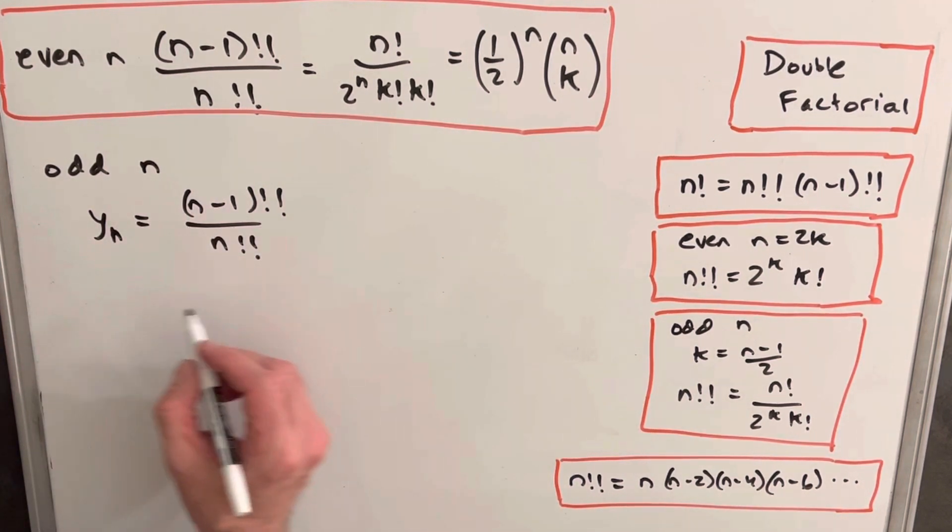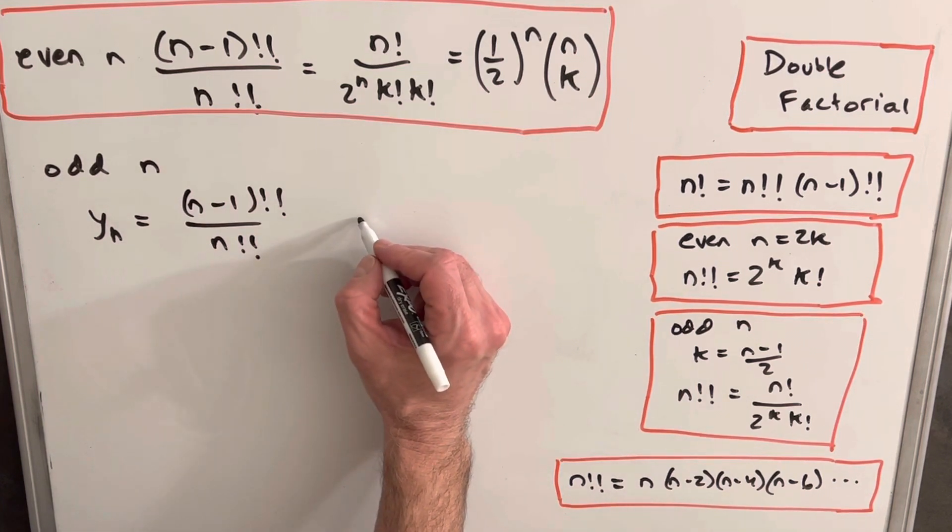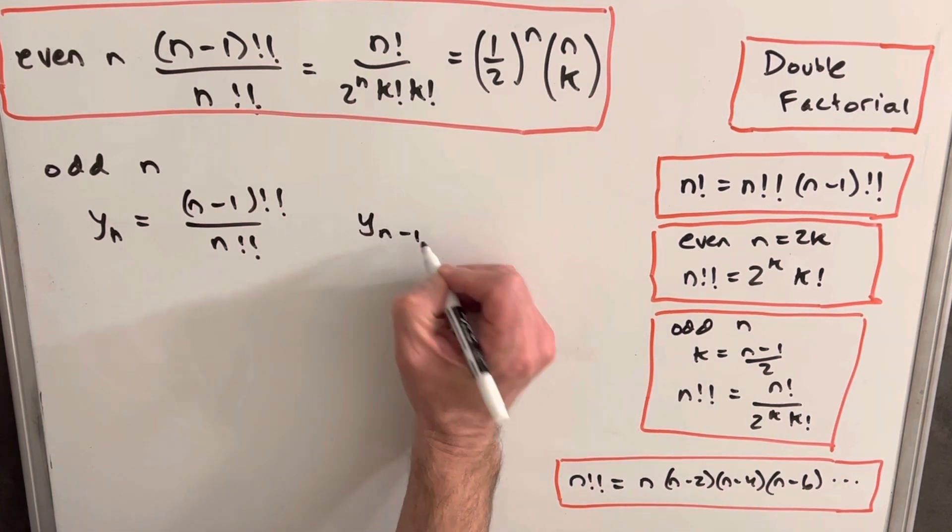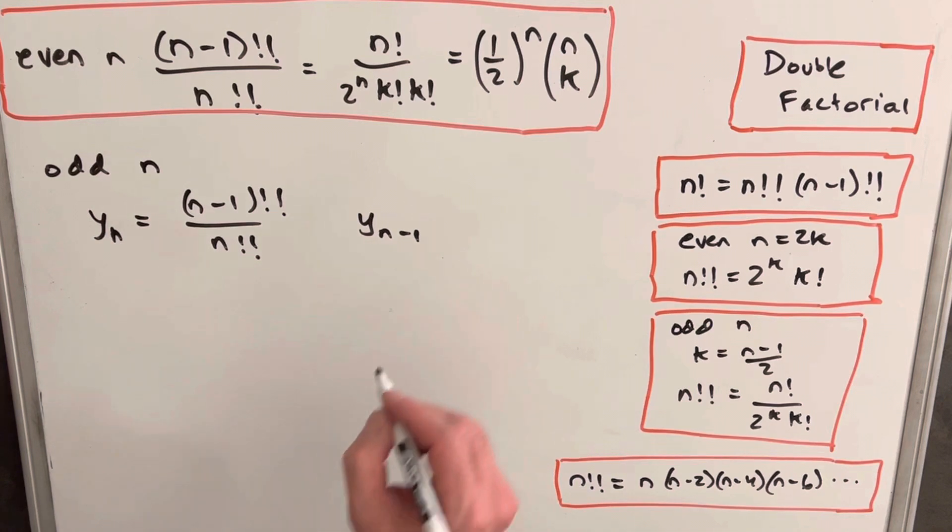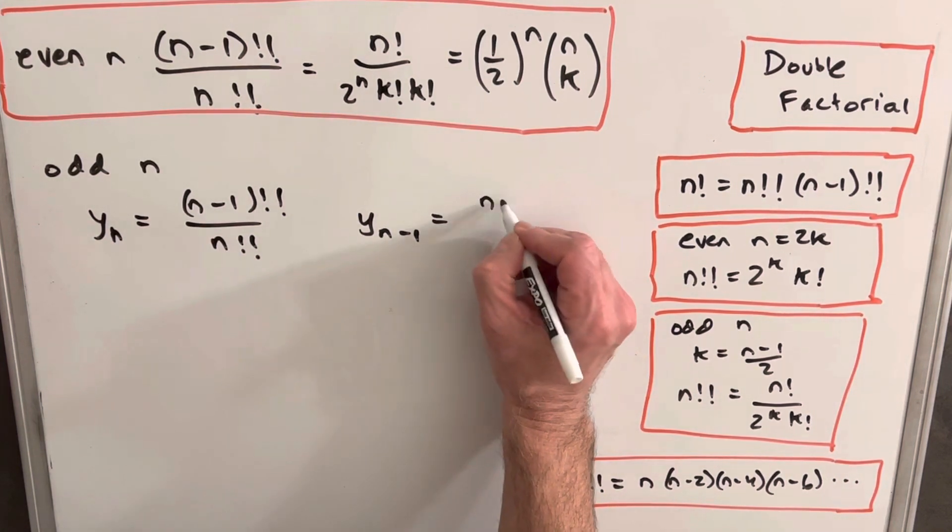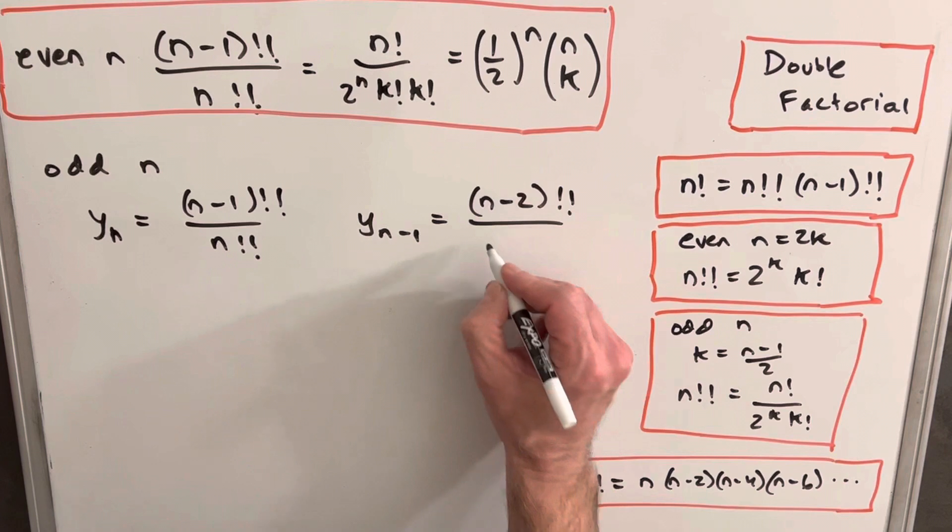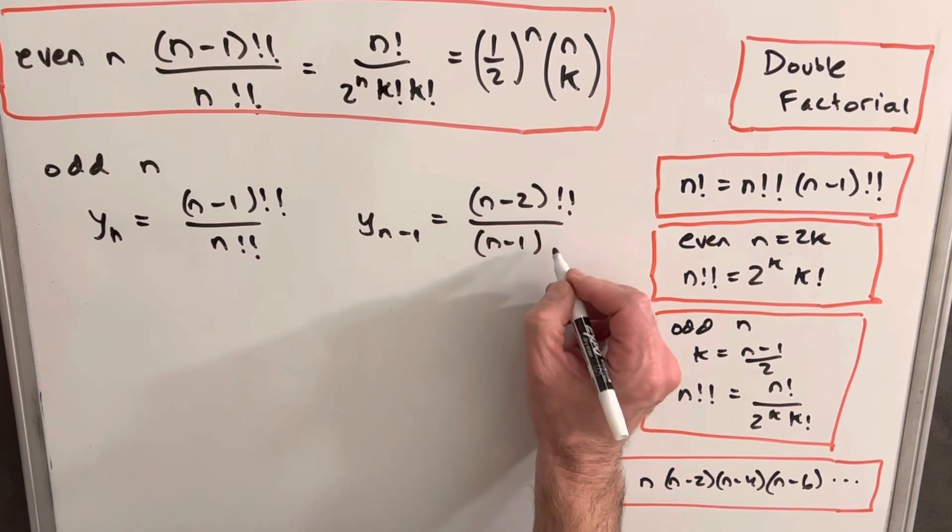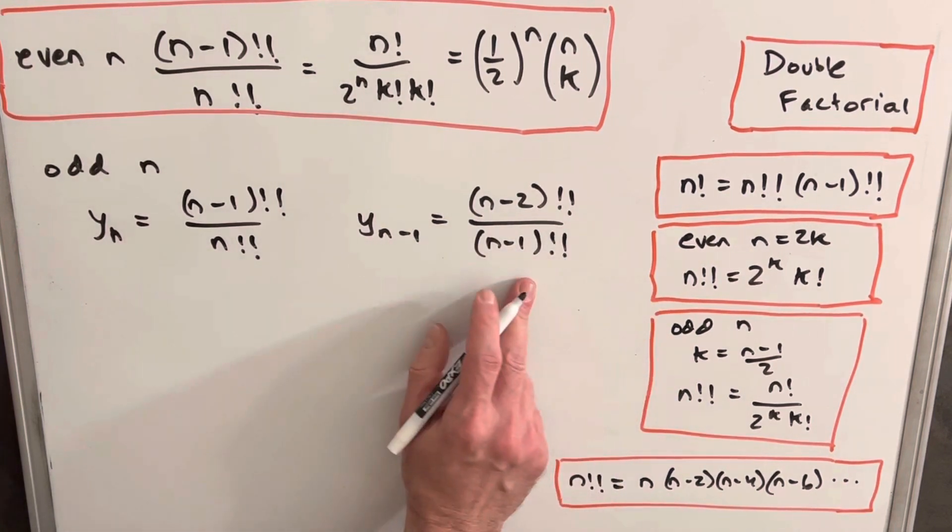And so this is the value we want to find, but then let's just look at what happens in the case of y sub n minus 1. We're going to have n minus 2 double factorial in the numerator, and then we're going to have n minus 1 double factorial in the denominator.